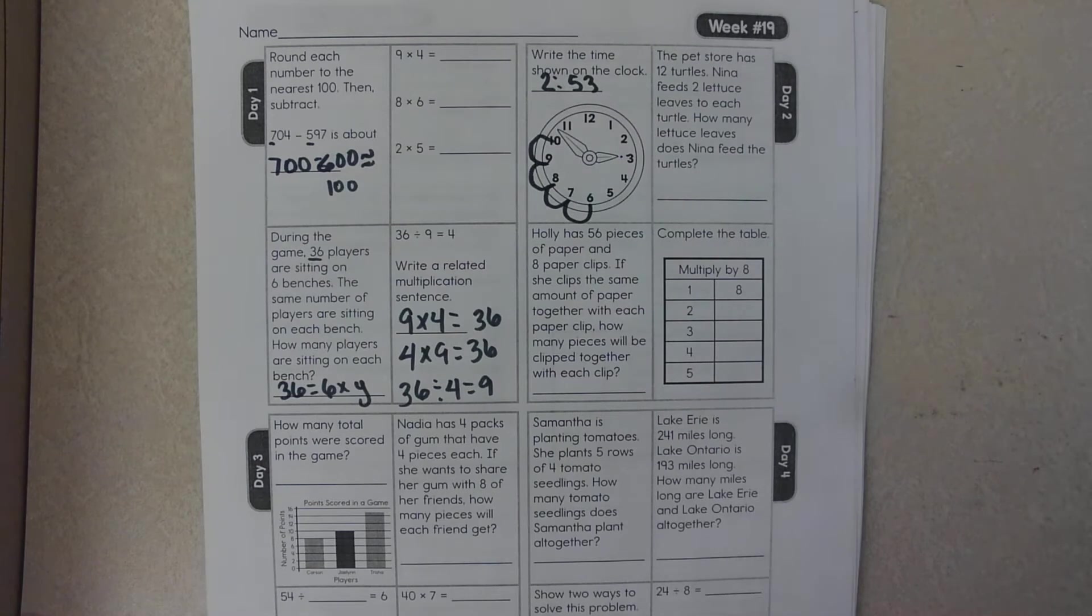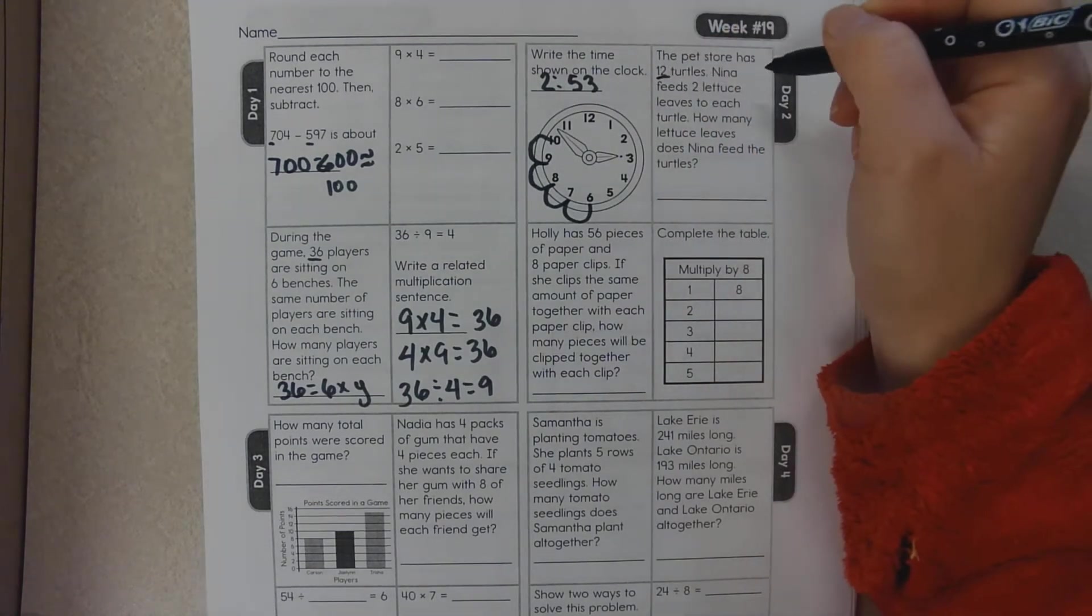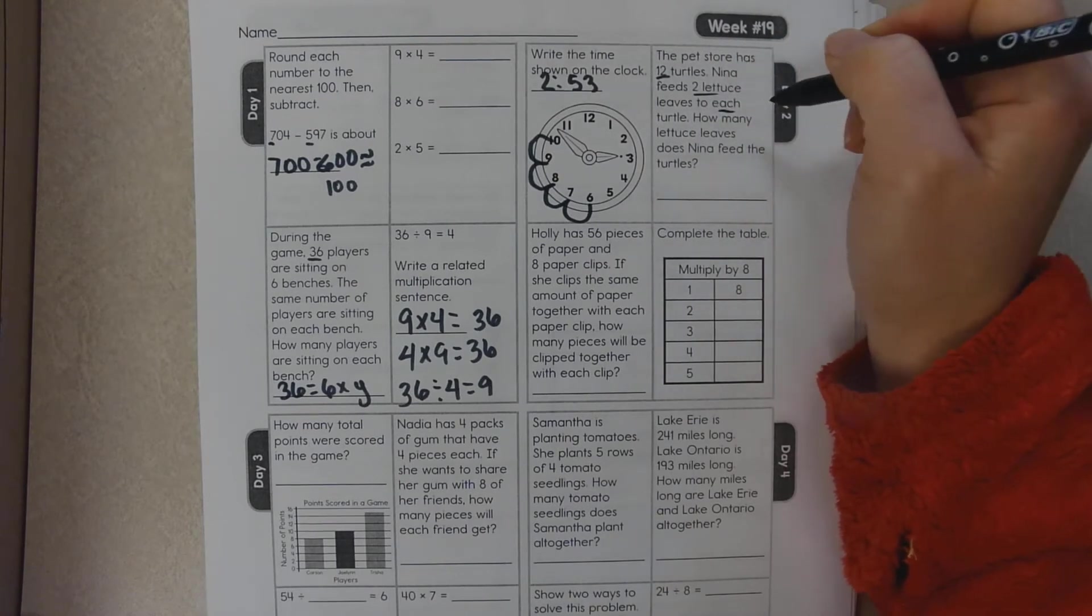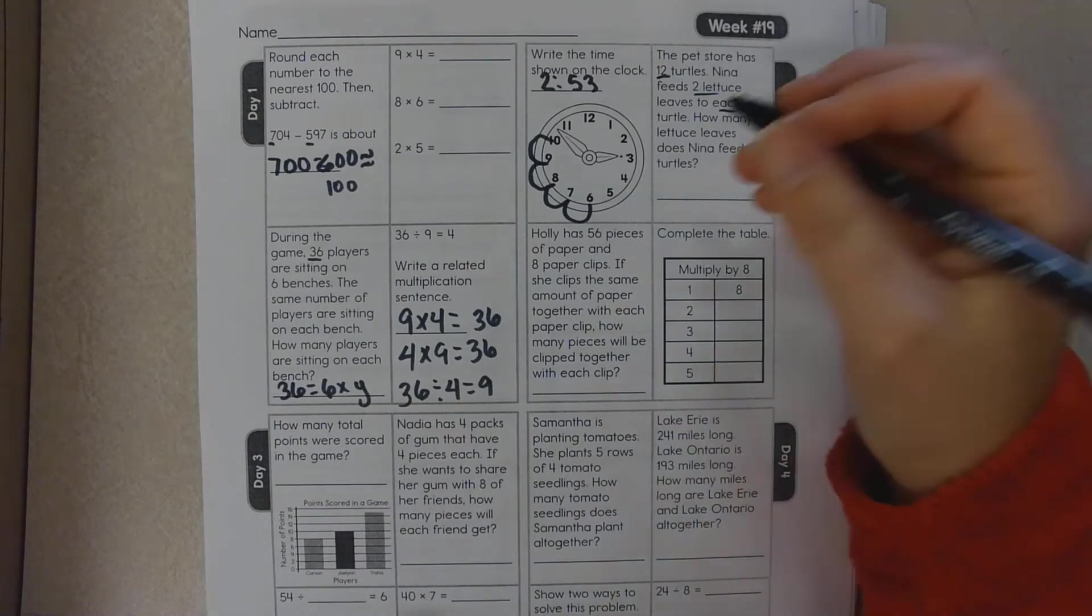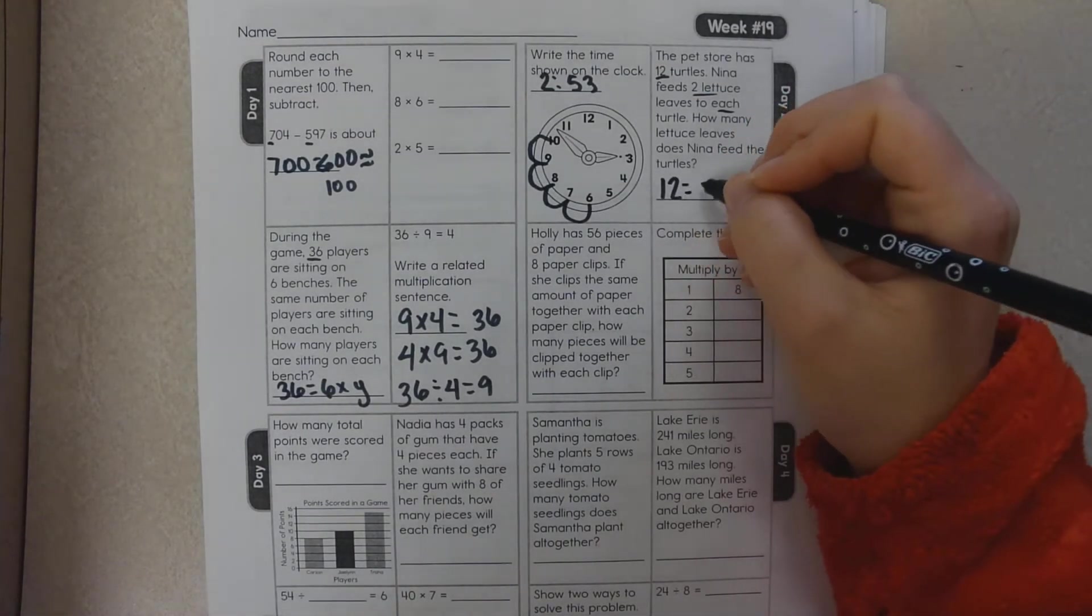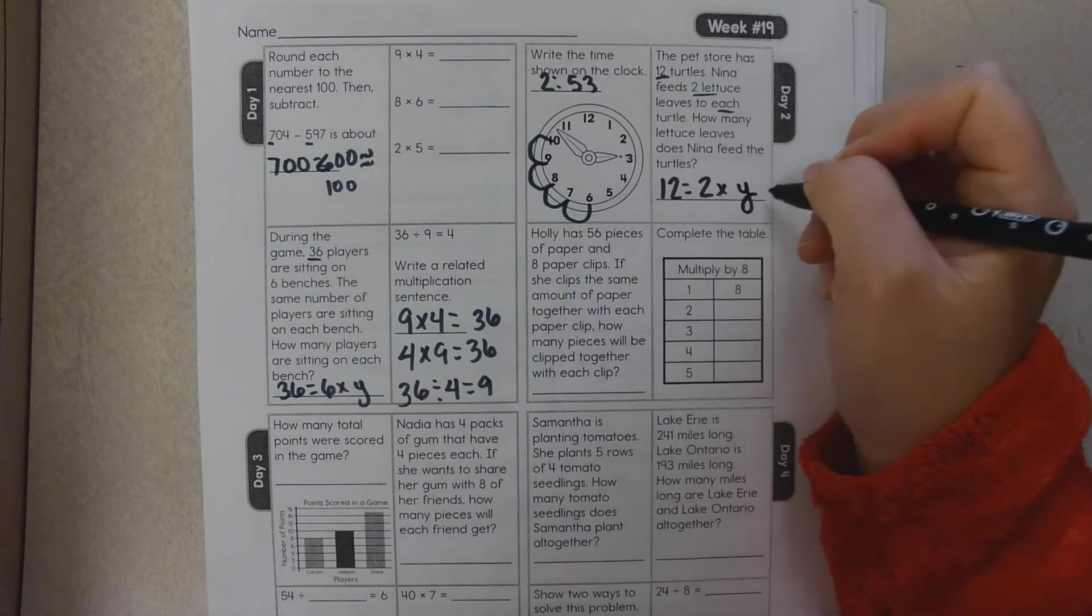The pet store has 12 turtles. Nina feeds two lettuces each day to each turtle. How many lettuce leaves does Nina feed the turtles? So 12, two times an unknown number. This is actually a division problem. So how many times does two go into 12?